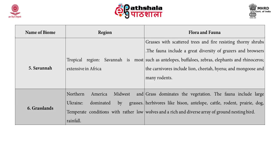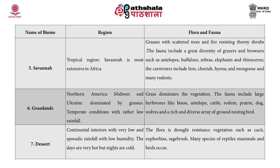Sixth, the grassland: found in northern America, midwest, and Ukraine, dominated by grasses in temperate conditions with rather low rainfall. The grasses dominate the vegetation. The fauna includes large herbivores like bisons and antelopes, cattle, rodents, prairie dogs, bulls, and a rich and diverse array of ground-nesting birds. Desert: found in continental interiors with very low and sporadic rainfall and low humidity; days are very hot and nights are cold. The flora is drought-resistant vegetation such as cacti and euphorbias; sage; many species of reptiles, mammals, and birds also occur.